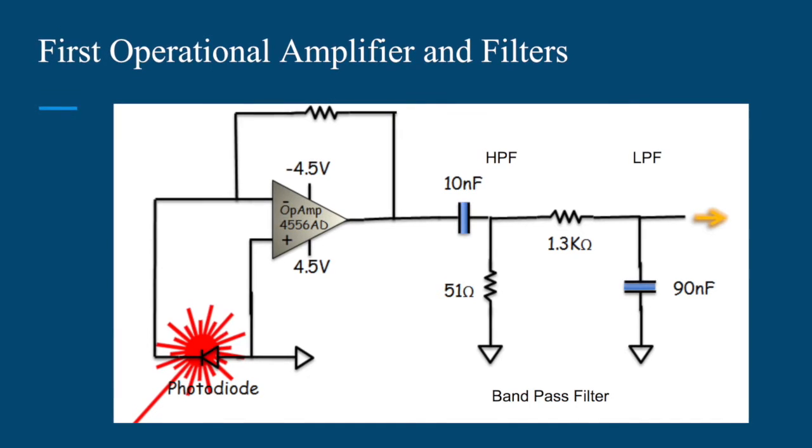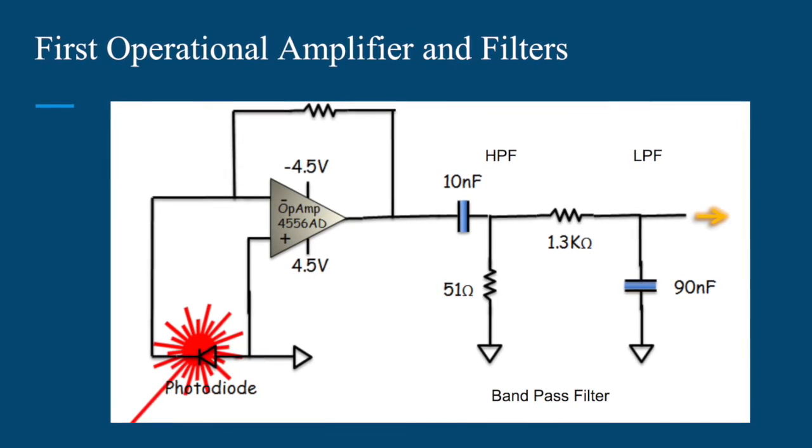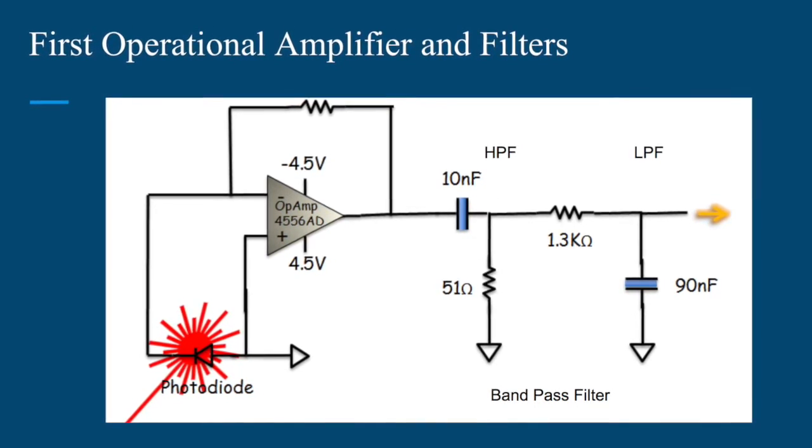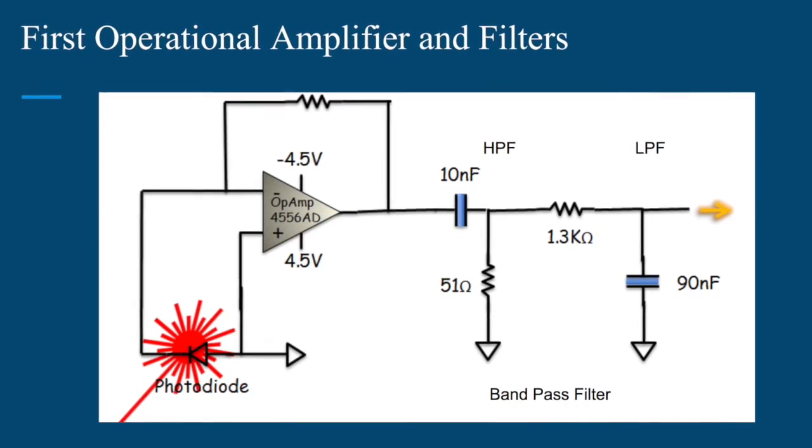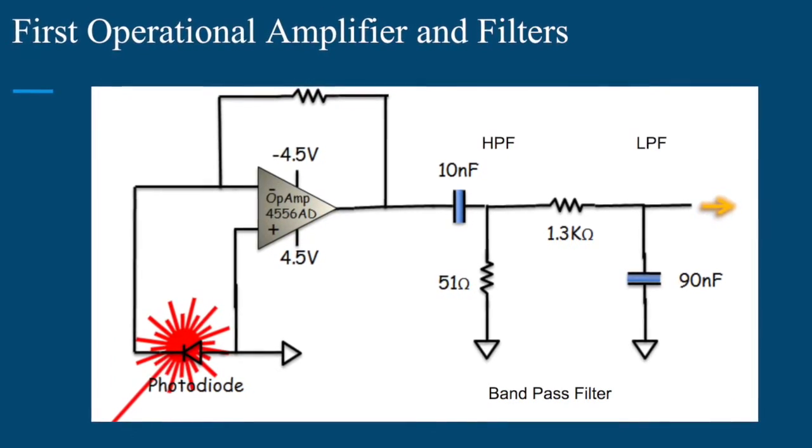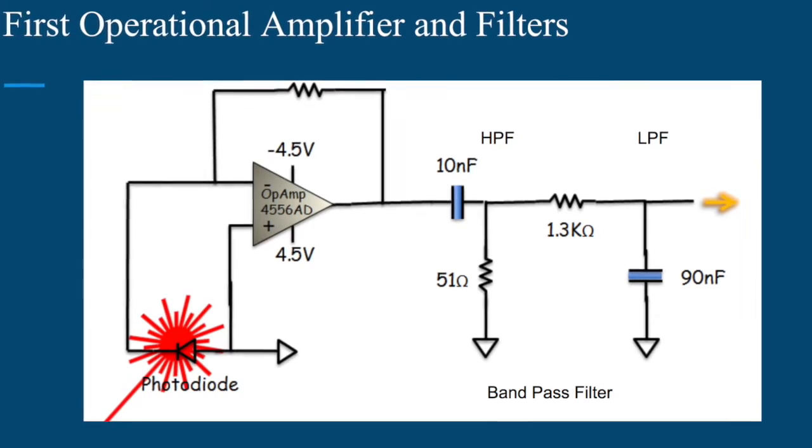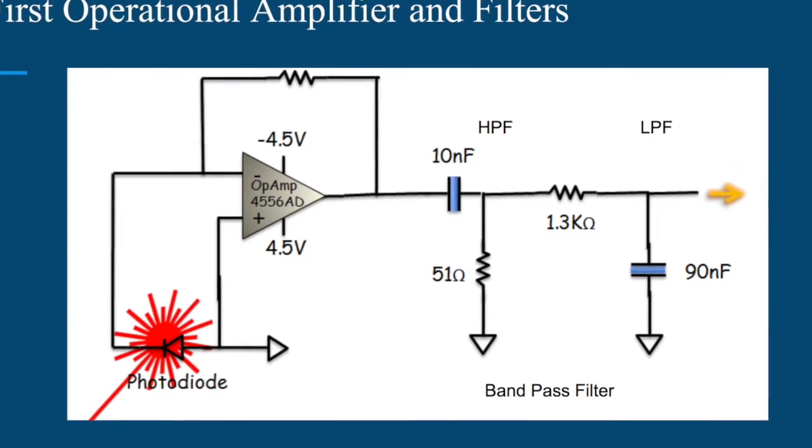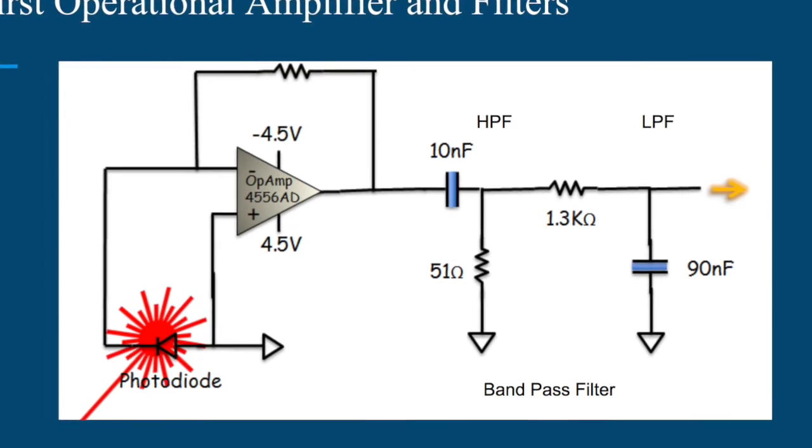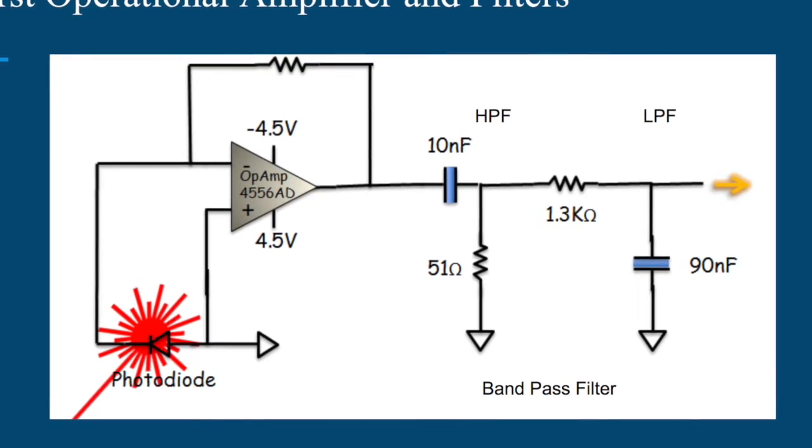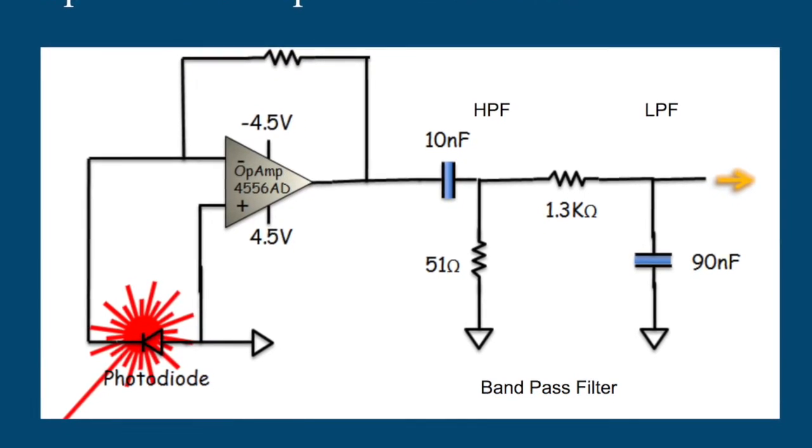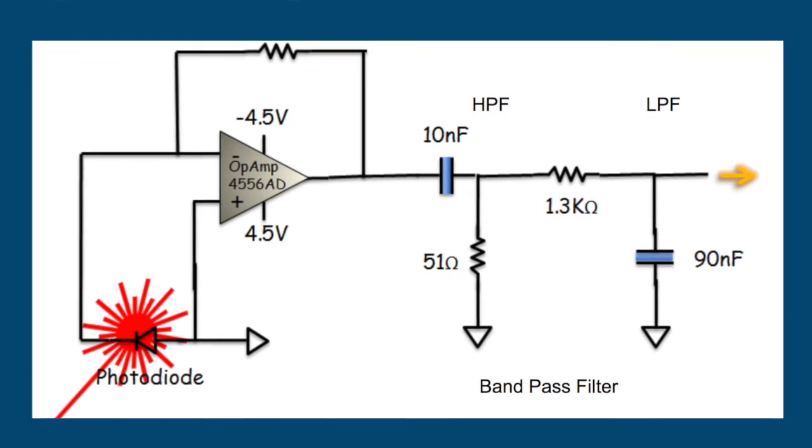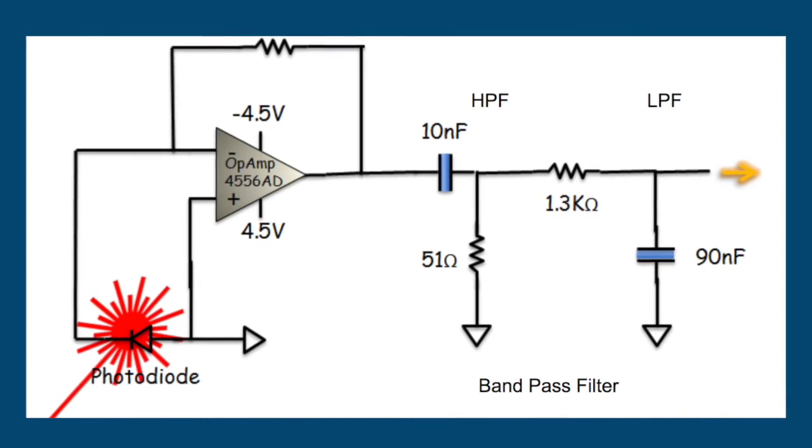This is the schematic for the first operational amplifier and the filters in our receiver circuit. The laser hits the photodiode and the signal can be seen across the component. That signal is inputted into the operational amplifier which amplifies the signal. The signal is then passed through the high pass filter which only allows high frequencies through and then the low pass filter which only allows low frequencies through. Together these filters are called a band pass filter.